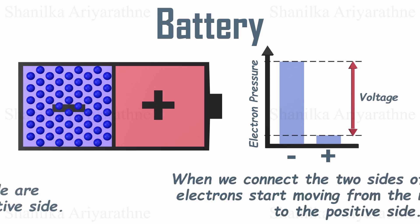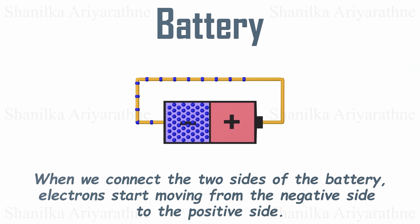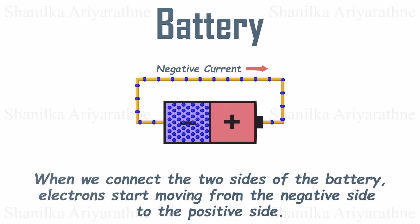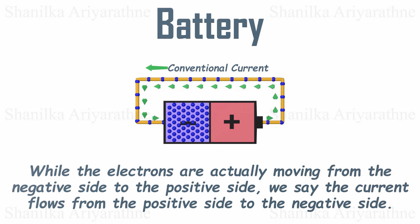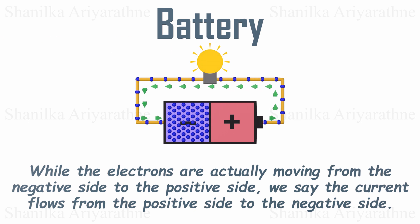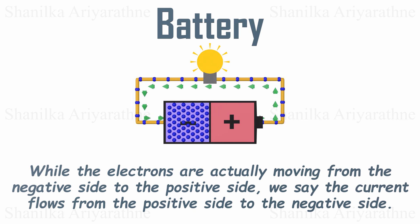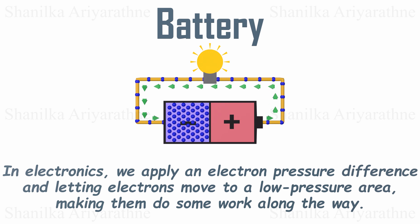Now let's give those electrons a path using a conductor. When we connect the two sides of the battery, electrons start moving from the negative side to the positive side. This movement of electrons is called a negative current. But since we don't like negative things, we refer to the current as flowing from positive to negative — conventional current flows from the positive side to the negative side. So let's connect a light bulb to our battery. Now we have a complete circuit. The electrons travel to a less pressured area, and we get useful work done, like lighting up a bulb. It's a win-win situation.